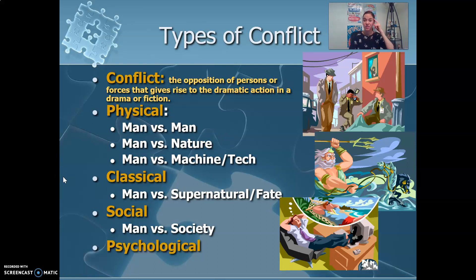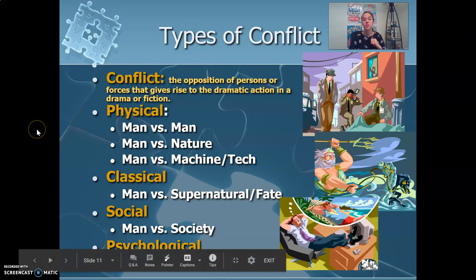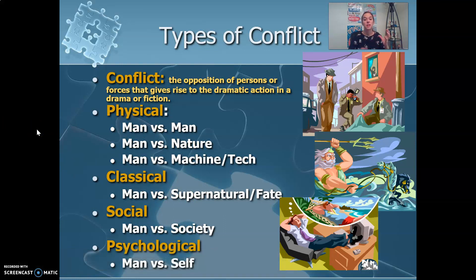And then finally, we have psychological conflict: man versus self. This is a really popular conflict style. I'm sure you have seen or read something in the past 24 hours where man versus self is involved. Anytime a character is conflicted inside — we see a lot of internal thinking, questioning, debate, or they're being really hard on themselves — anything inside their brain keeping them from progressing or meeting their goal is man versus self. We see that one very, very frequently, often layered within the others. The beautiful thing about conflicts is that they all kind of interweave together.